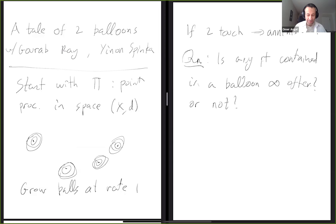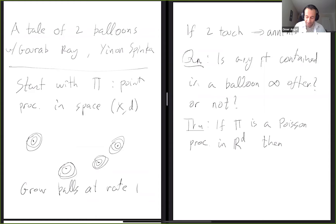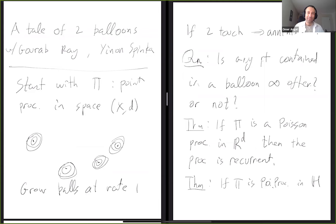Transient means that eventually the balloons are far away from the origin. We can prove the following theorems. If π is a Poisson process in ℝᵈ, then it's recurrent. On the other hand, if π is a Poisson process in the hyperbolic plane ℍ, it is transient — meaning every point is eventually not contained in any balloon.